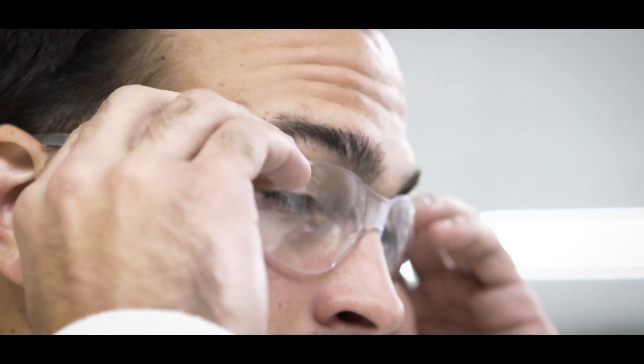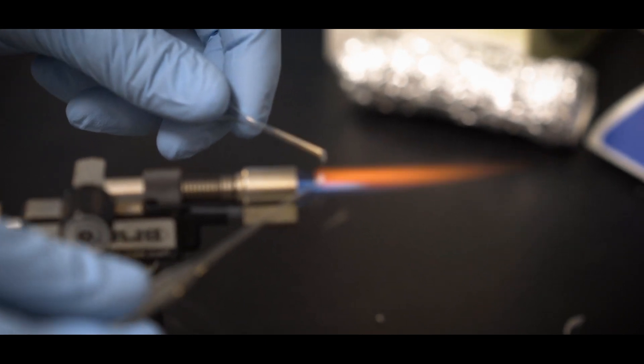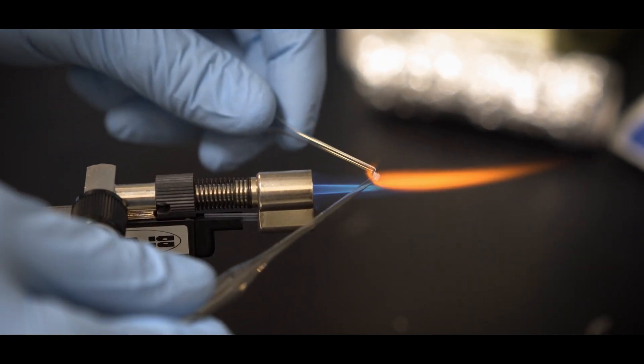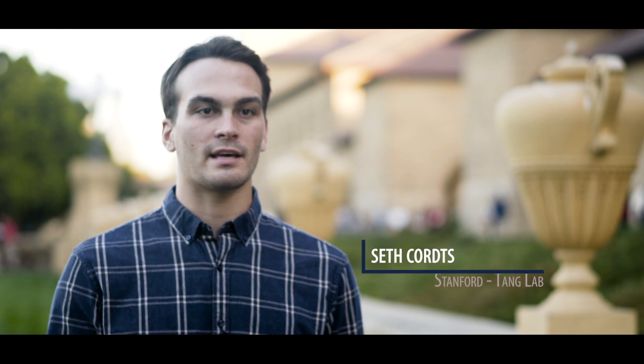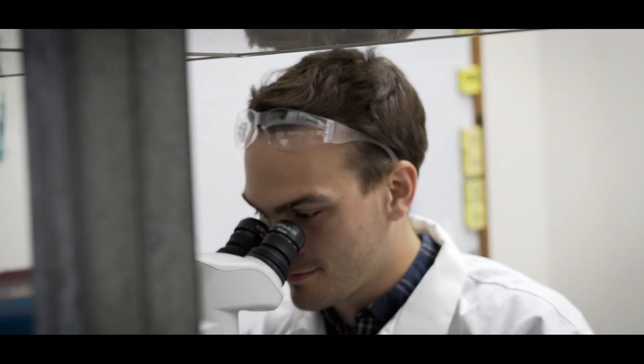The old method of cutting cells involved taking a glass pipette, holding it over a flame, and drawing it out until you had a glass needle. Then using that needle under a microscope, you would manually isolate a single cell and cut it. This required a lot of fine motor skills and patience.